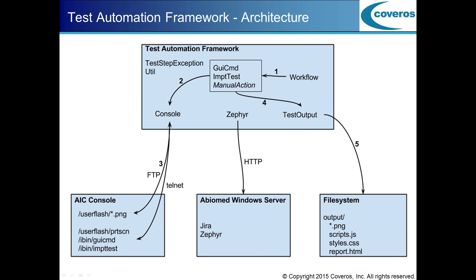Another class that we created was manual action. That was a request from the VNV team because we didn't have automated verification in place, and also because we don't currently have any way to simulate hardware. For a lot of the tests, you actually need to do something with the console — like plug in a pump, disconnect the pump, put in the purge cassette, or some other interaction with the hardware. So the manual action class just pauses and waits, prompting the user to do something on the console, and then the user does it and acknowledges that they performed the action.